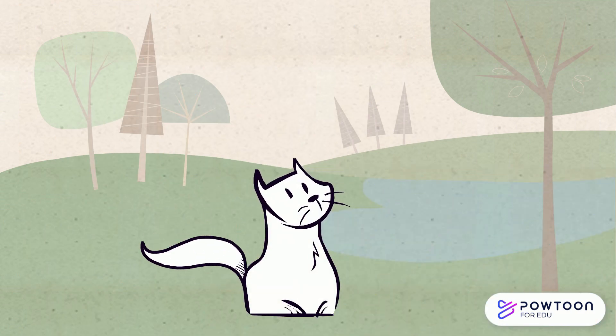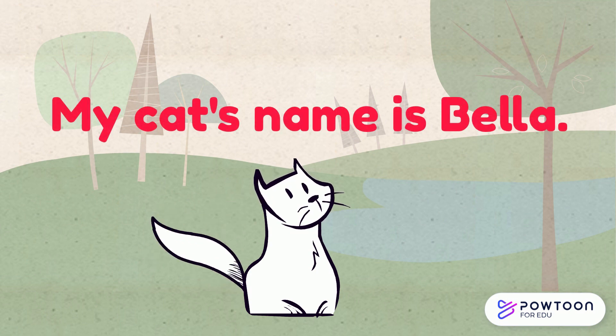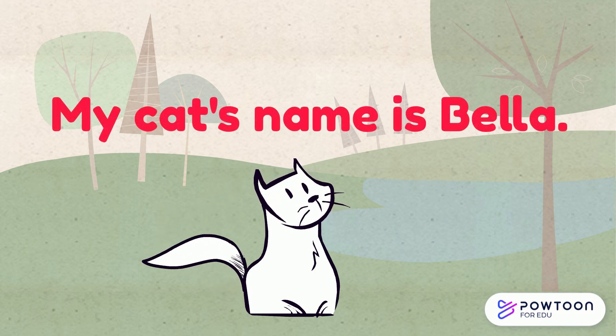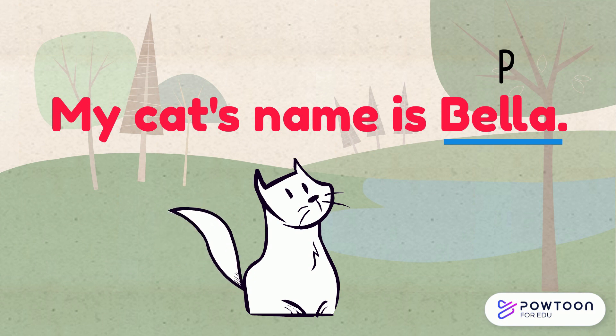Now let's look for proper nouns in sentences. In this example: my cat's name is Bella. The word Bella is a proper noun. It begins with a capital letter.